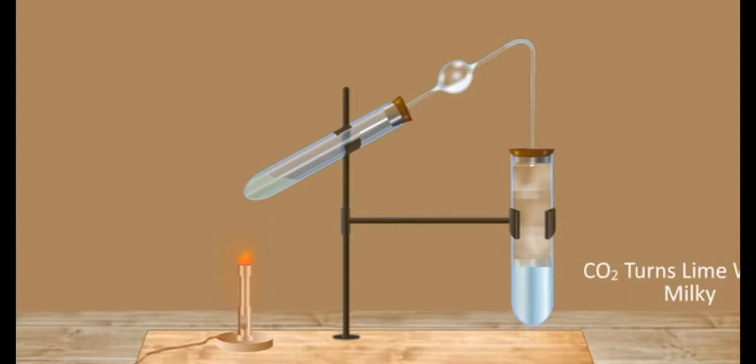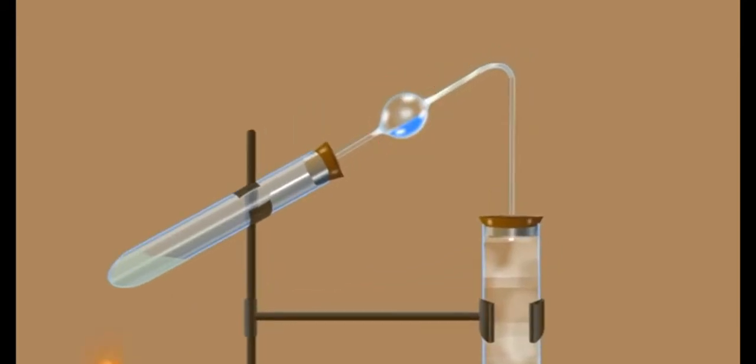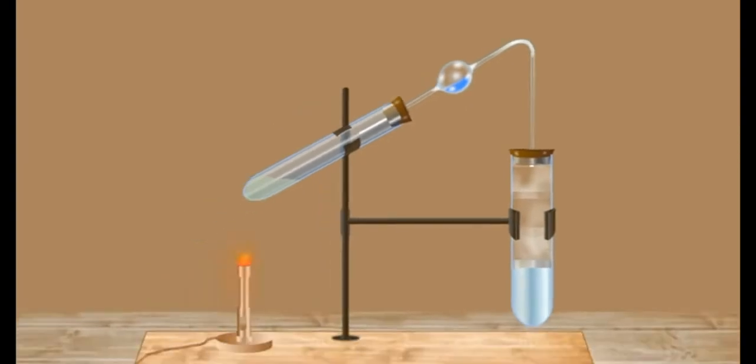The hydrogen in the compound is oxidized to water, which turns the anhydrous copper sulfate in the bulb blue. If the organic compound is a volatile liquid or gas,